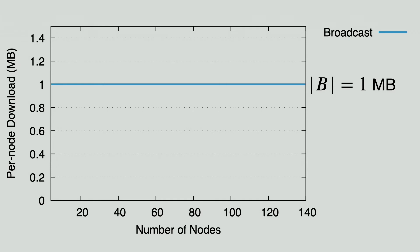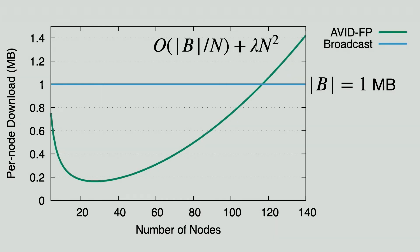First, we have broadcast. Each node downloads the whole block, so it's always one megabyte. Then we have the state-of-the-art VID protocol, AVIDFP. Observe that, initially, when there are more nodes, each node has to download a smaller chunk, so the curve goes down. However, as we add even more nodes, the N squared component kicks in and the curve goes up. When there are more than 120 nodes, each node has to download more than one megabyte of data running AVIDFP, so there's no saving at all after that point.